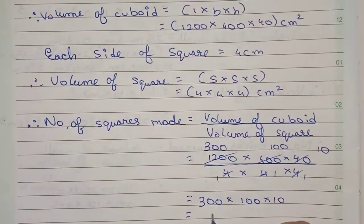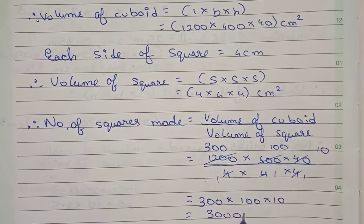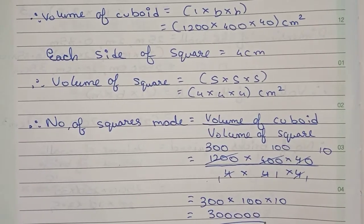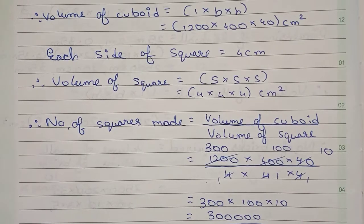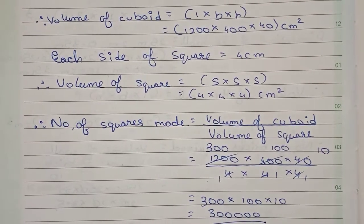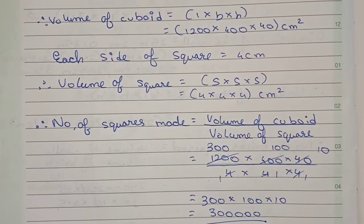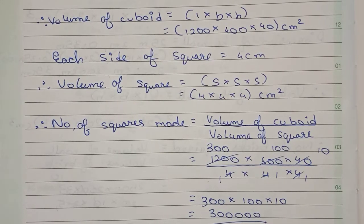Which will be equal to 300000. So this is the number of squares formed by the cuboid. This is our final answer for this question. So guys, thanks for watching this video and please subscribe my channel for more solutions.